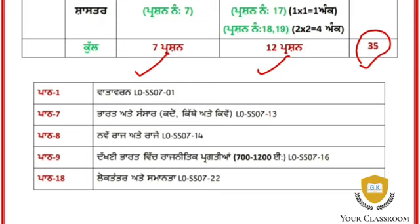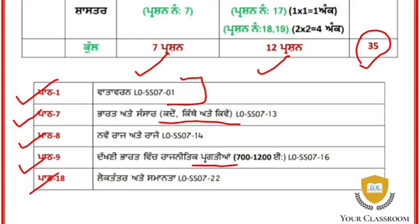Let's see our chapters. In April and May, the chapters covered include Class 7 chapters 1, 7, 8, 9, 18. The geography and civics chapters are included, along with three chapters from history. The last chapter covers civics and navigation.